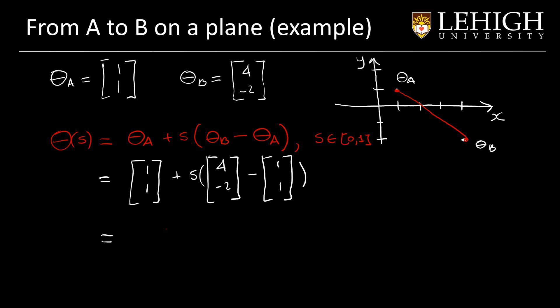Finally, we just do the subtraction and we get the equation of the line that describes the path from point A to point B. And this is the final result.